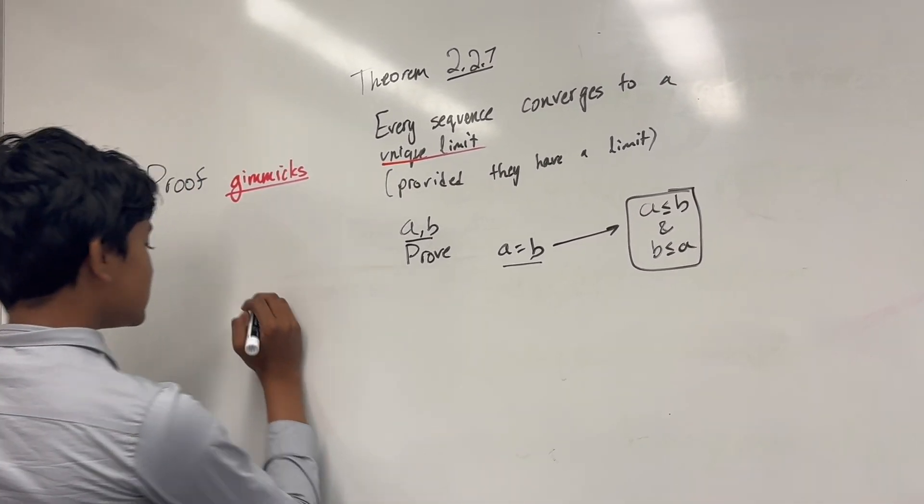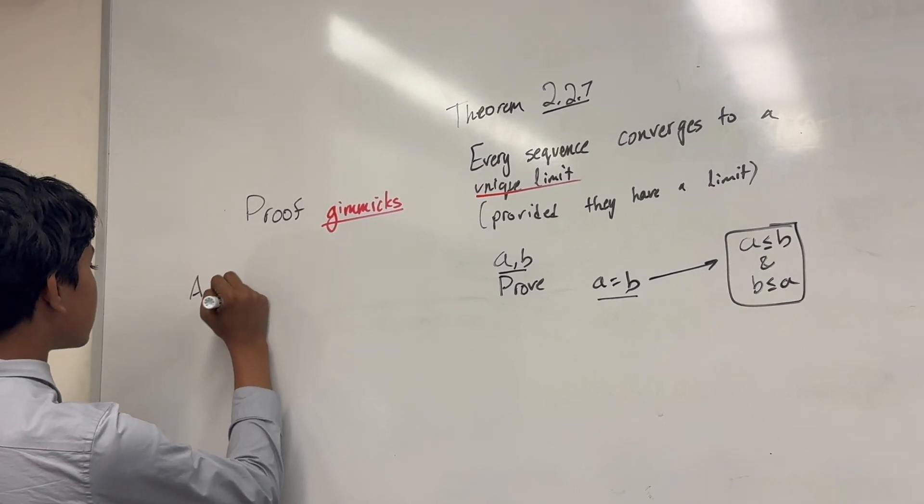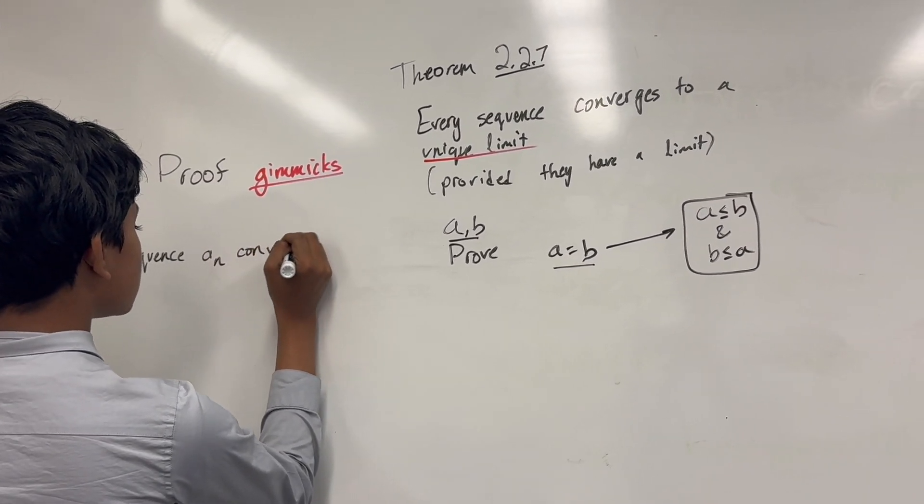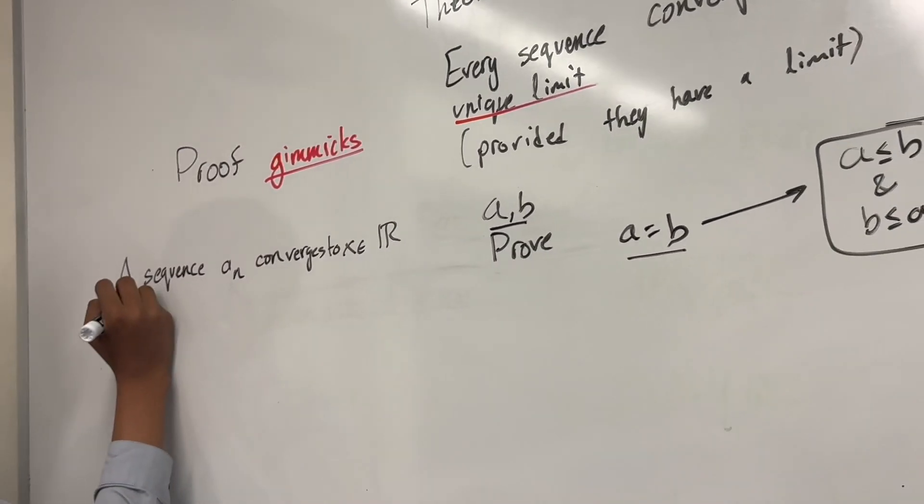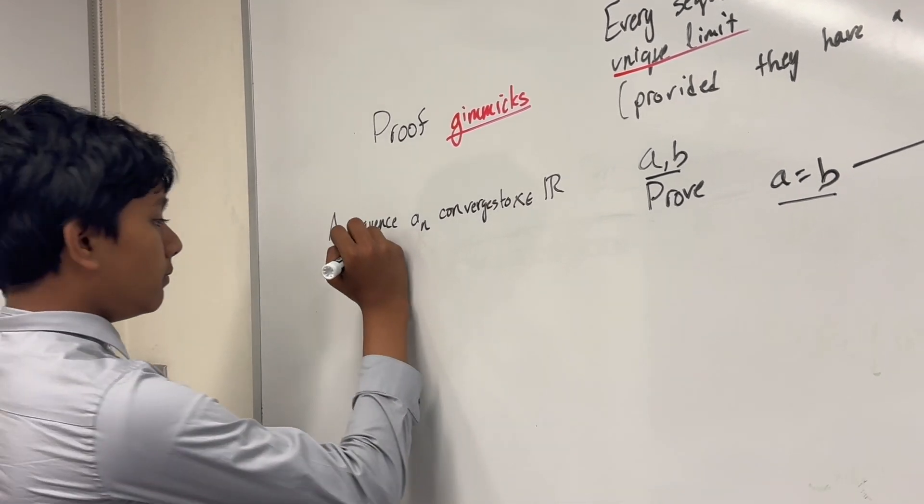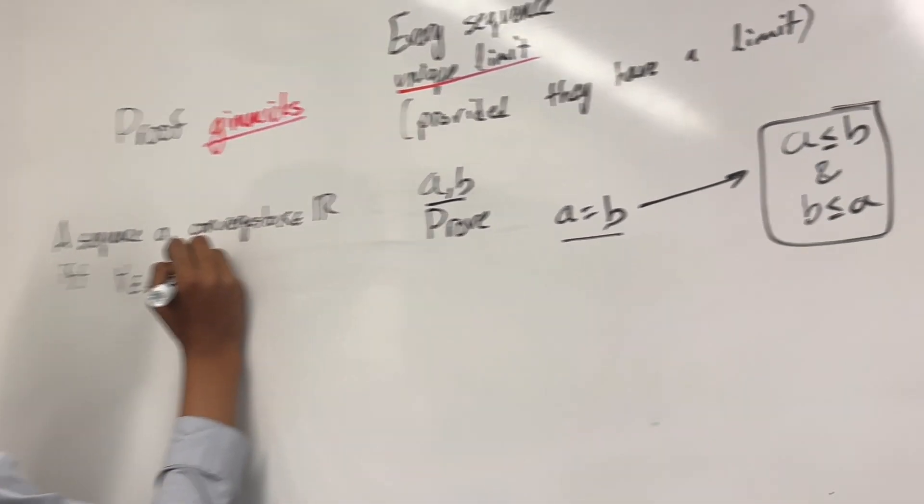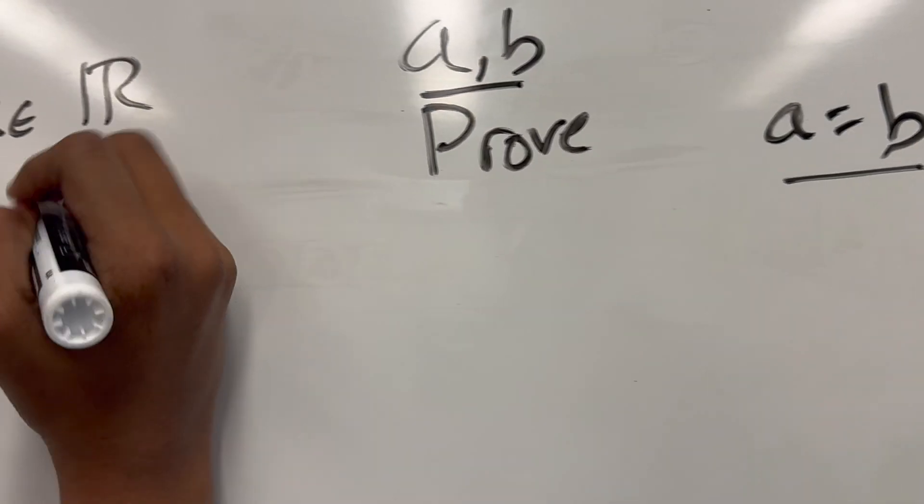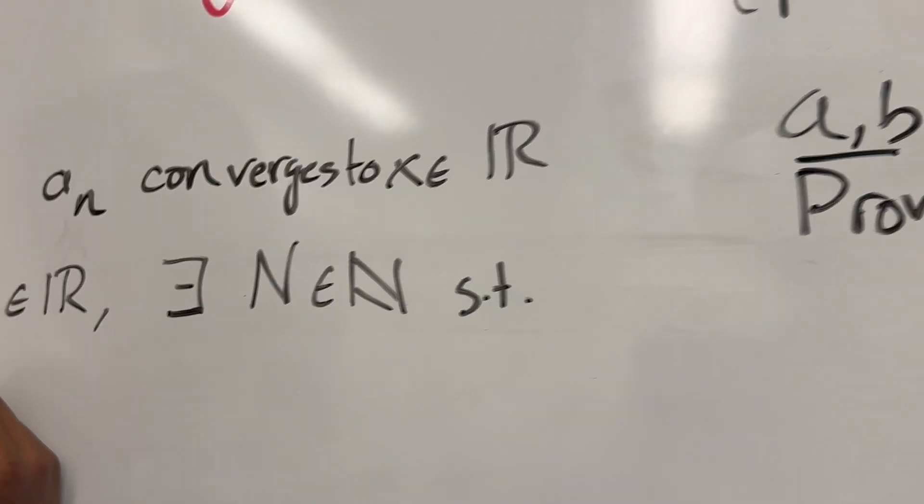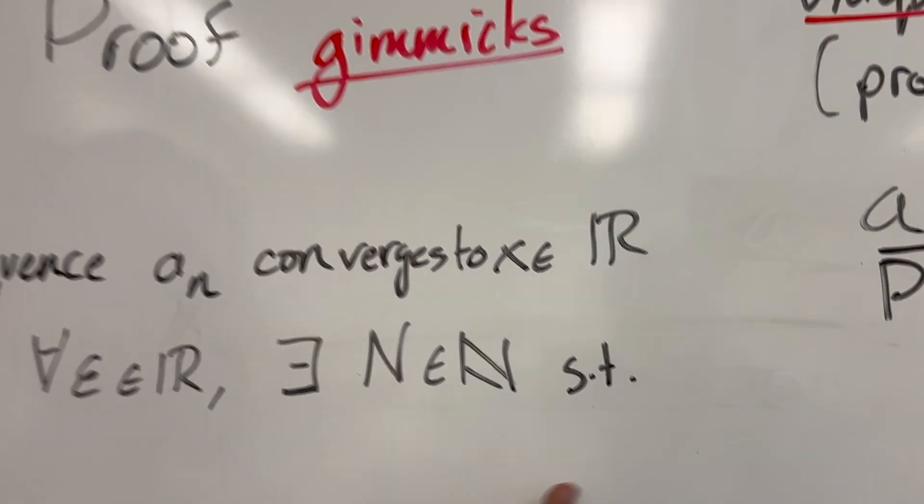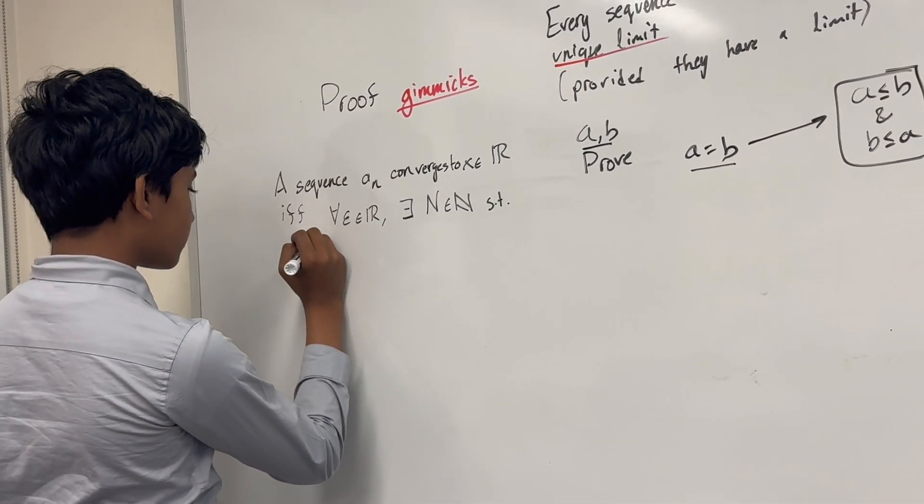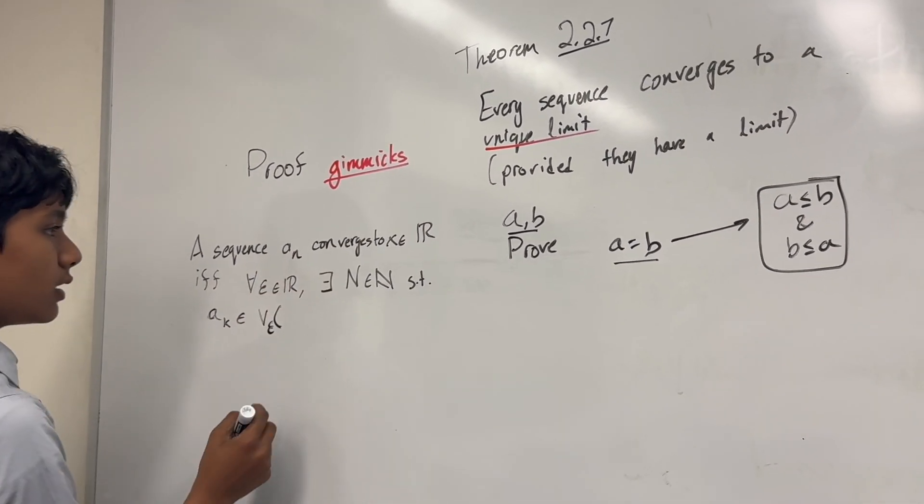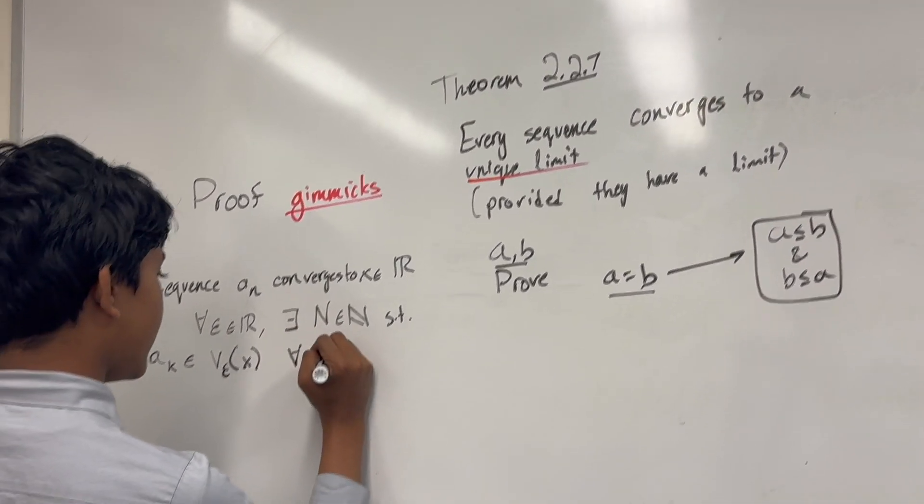Now, what does it mean to be a limit? Well, essentially, in formal notation, a sequence, A sub K, or A sub N, converges to some real number X, if and only if, for all epsilon in the reals, there exists some N in the natural numbers, such that AK is in the epsilon neighborhood of X, for all K is greater than or equal to N.